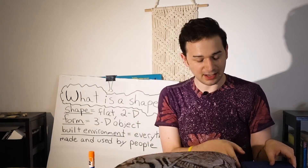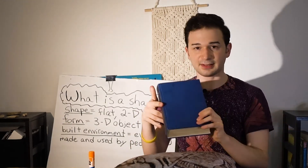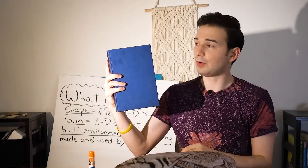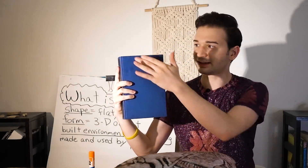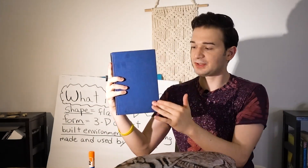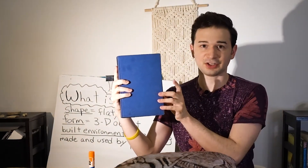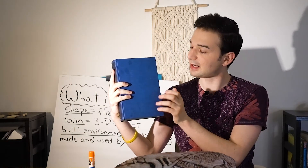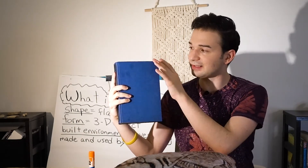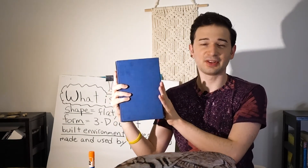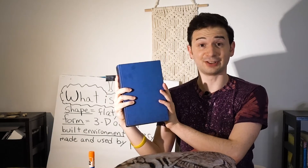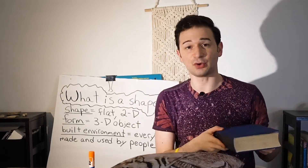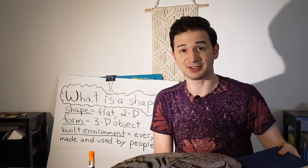I also found this book. What would be the shape of this? It has four sides, just like the square, but it's got two short sides and two long sides. So this one is a rectangle. What kinds of shapes were you able to find?